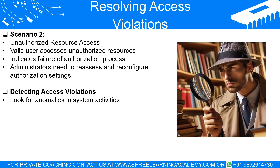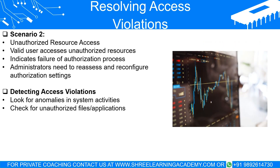Detecting Access Violations. Detecting access violations can be challenging as they often leave behind subtle signs. These signs might be anomalies in system activities, unauthorized or unexpected files and applications, or missing files that were expected to be there. It's like coming home to find your books rearranged or a window opened — tiny changes that might suggest an intruder. For instance, sudden spikes in network traffic, unusual system log entries, or unexpected system crashes may indicate access violations. Similarly, detecting new unknown files or applications on your system, or noticing that certain files are missing or have been altered, could also be a sign of unauthorized access.